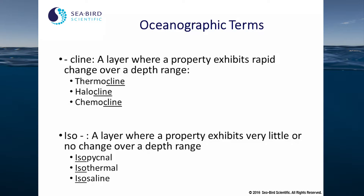There are two suffixes and prefixes that show up repeatedly in oceanographic terms. The suffix 'cline' designates a layer where a property exhibits rapid change over a depth range. Hence, the thermocline, the halocline, and the chemocline are areas where temperature, salinity, and a chemical constituent such as dissolved oxygen all change rapidly.